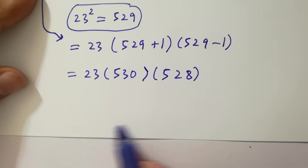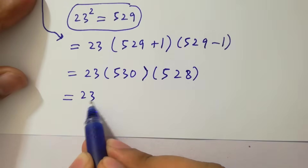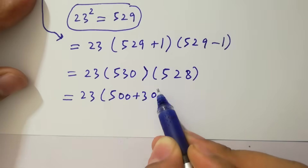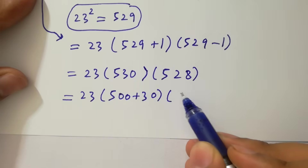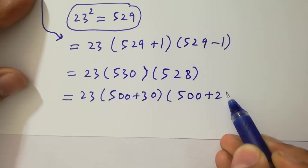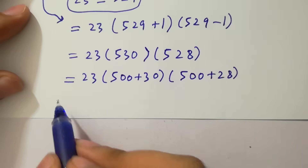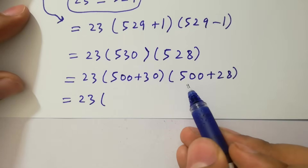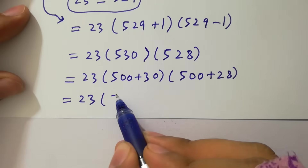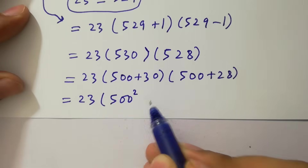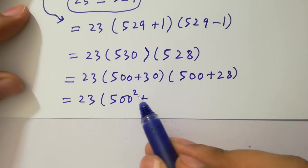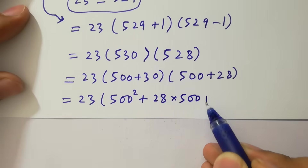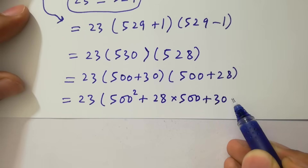530 is the same as 500 plus 30, and 528 is the same as 500 plus 28. Multiplying them together, we expand: 500 times 500 gives 500 squared, plus 500 times 28, plus 30 times 500,